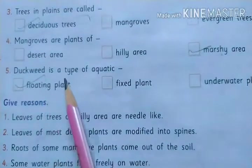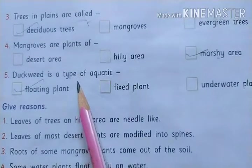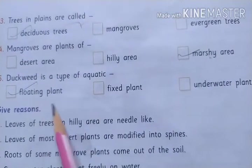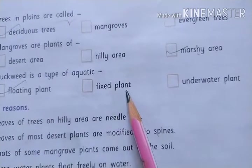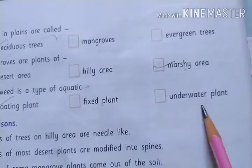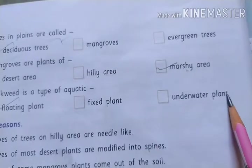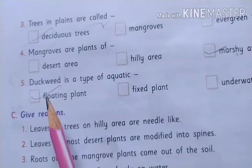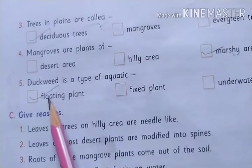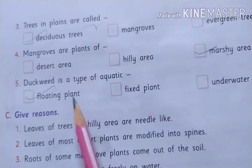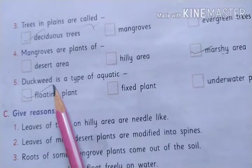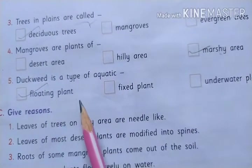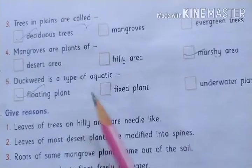Duckweed is a type of: floating plant, fixed plant, or underwater plant? The answer is floating plant — duckweed is an example of a floating plant.